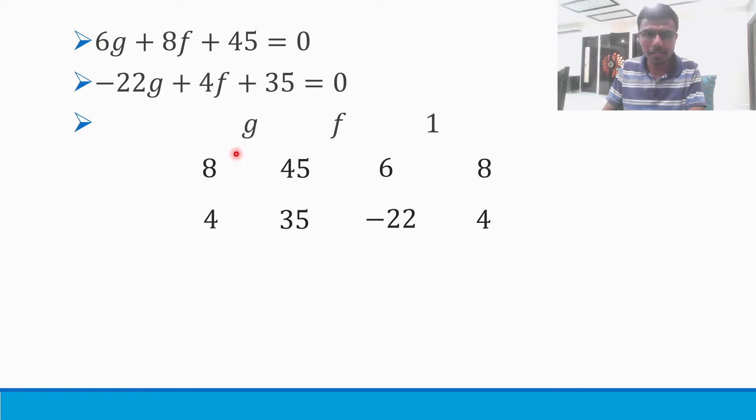So what I would be getting is g divided by 8 × 35 minus 4 × 45. So 8 × 35 is 280 and 4 × 45 is 180.